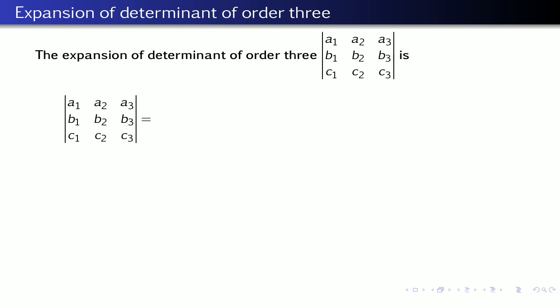I expand this determinant by using the first row, that is by using elements of the first row. For the expansion, first I write the first element a1, then I delete the row and the column in which this element lies. Since a1 lies in the first row and first column, I delete that row and column and write the remaining as a determinant: b2, b3 and c2, c3.